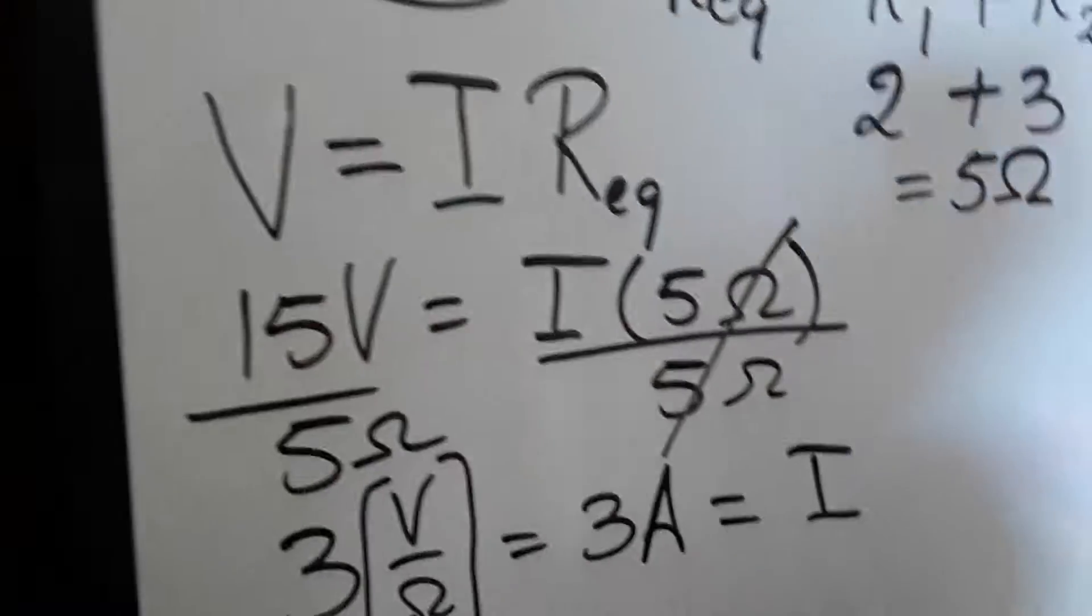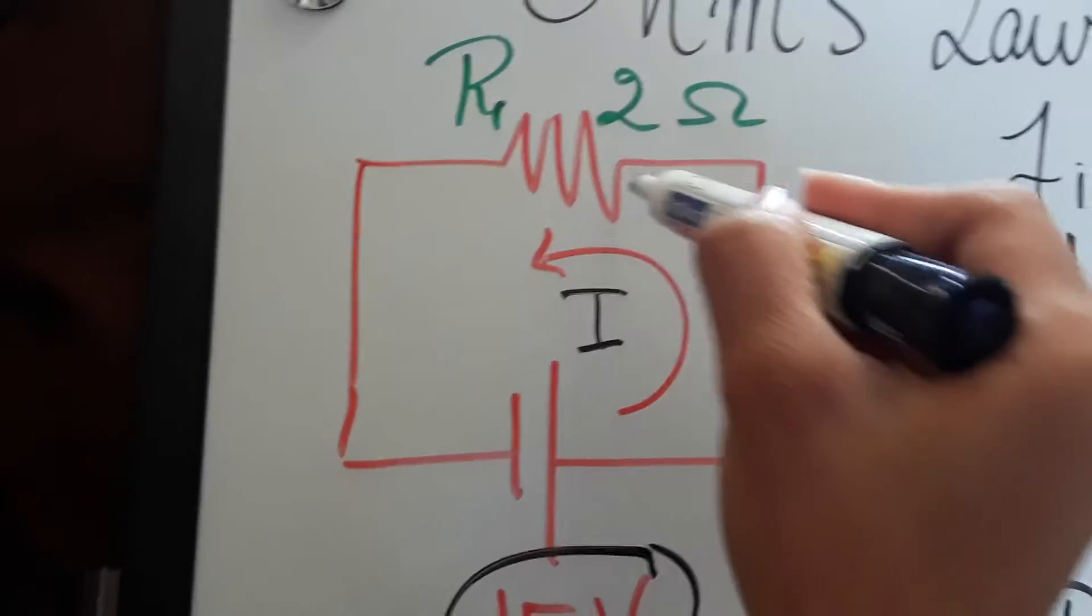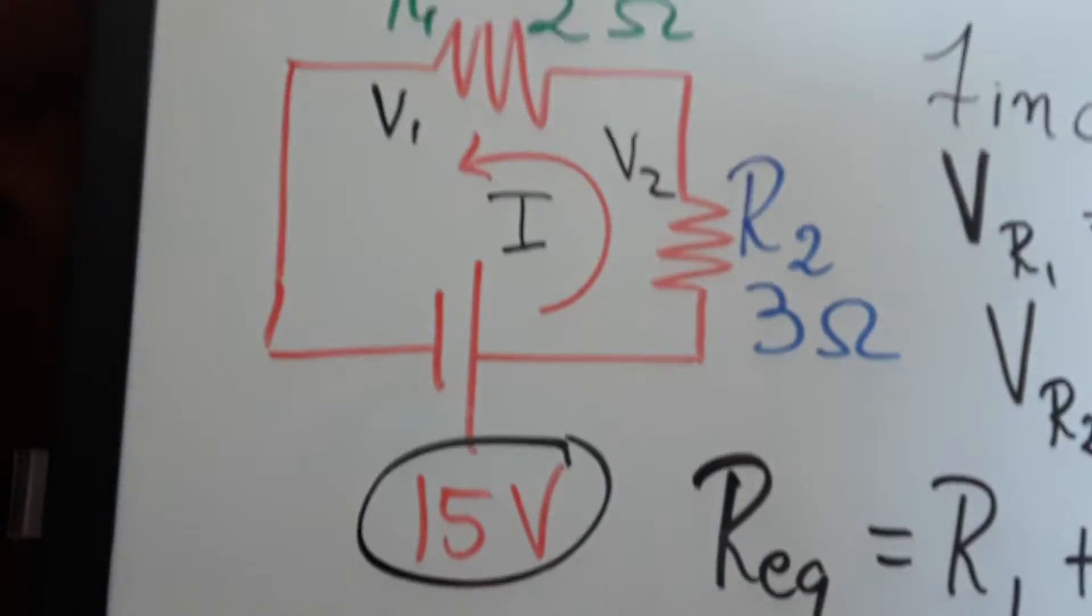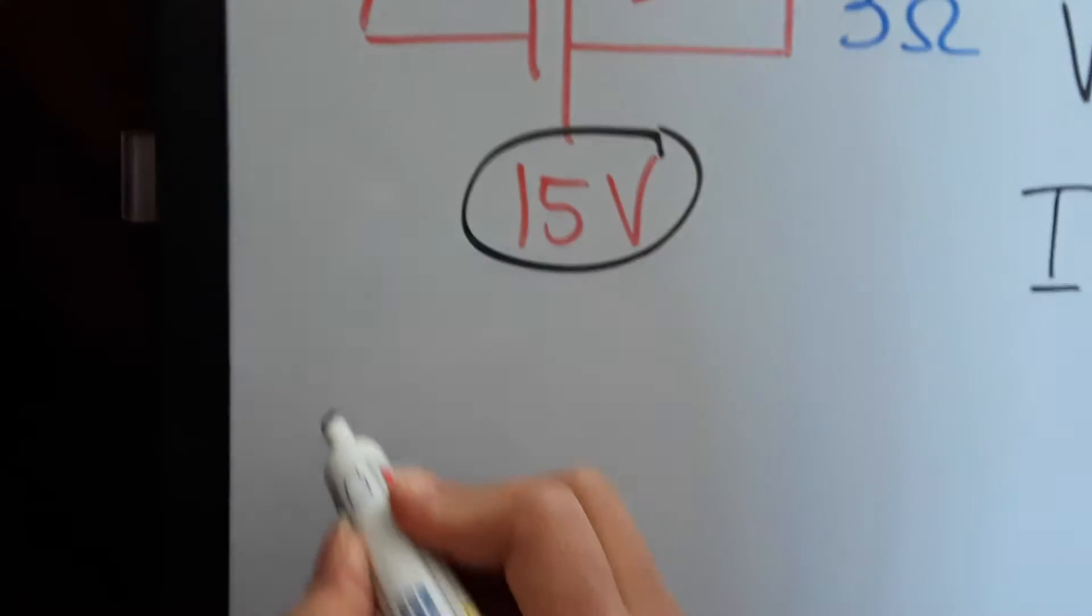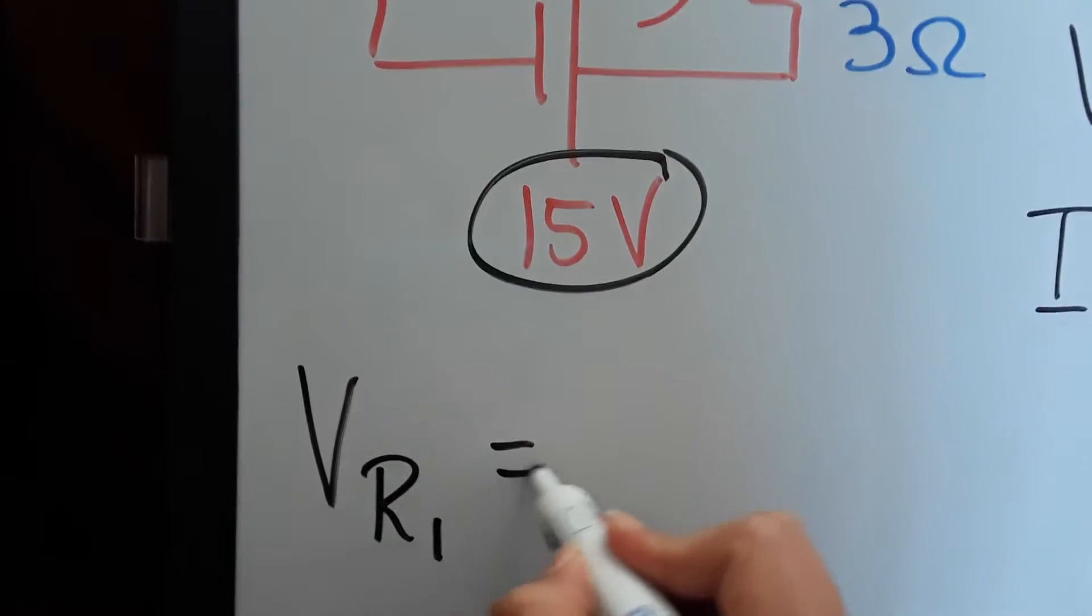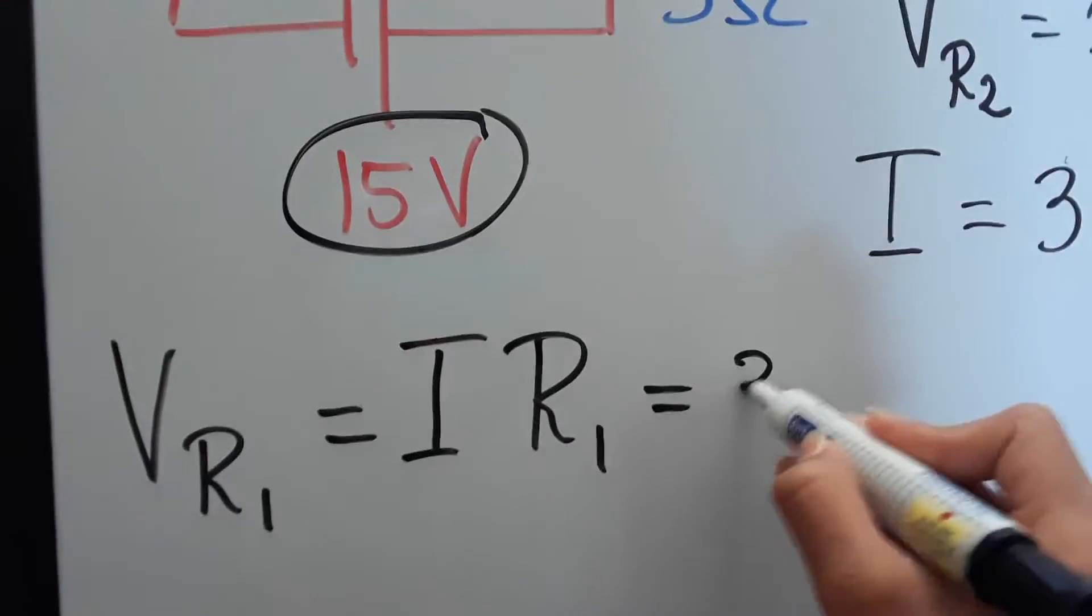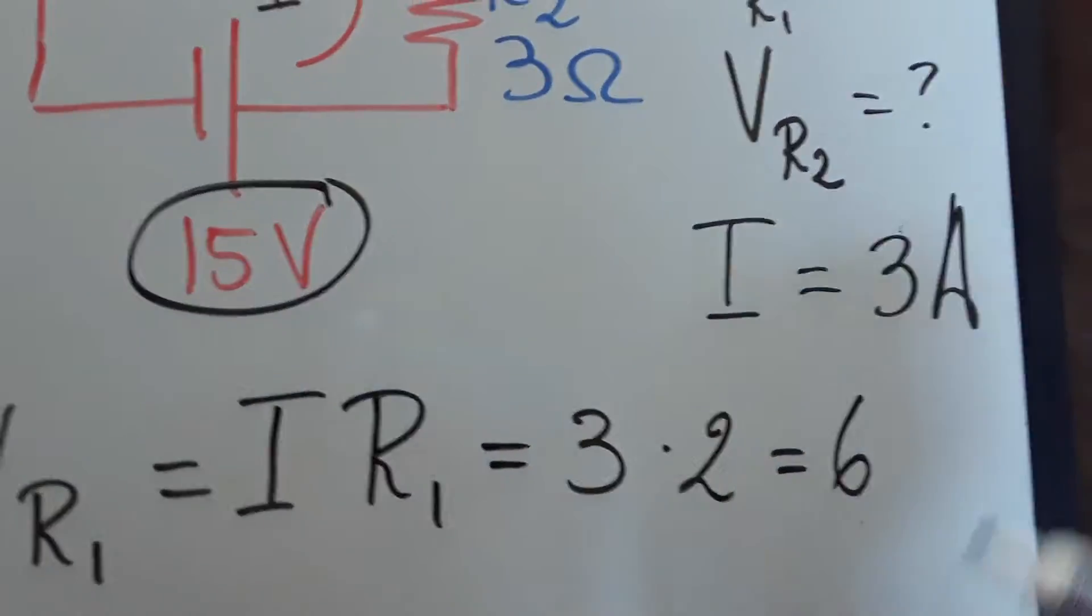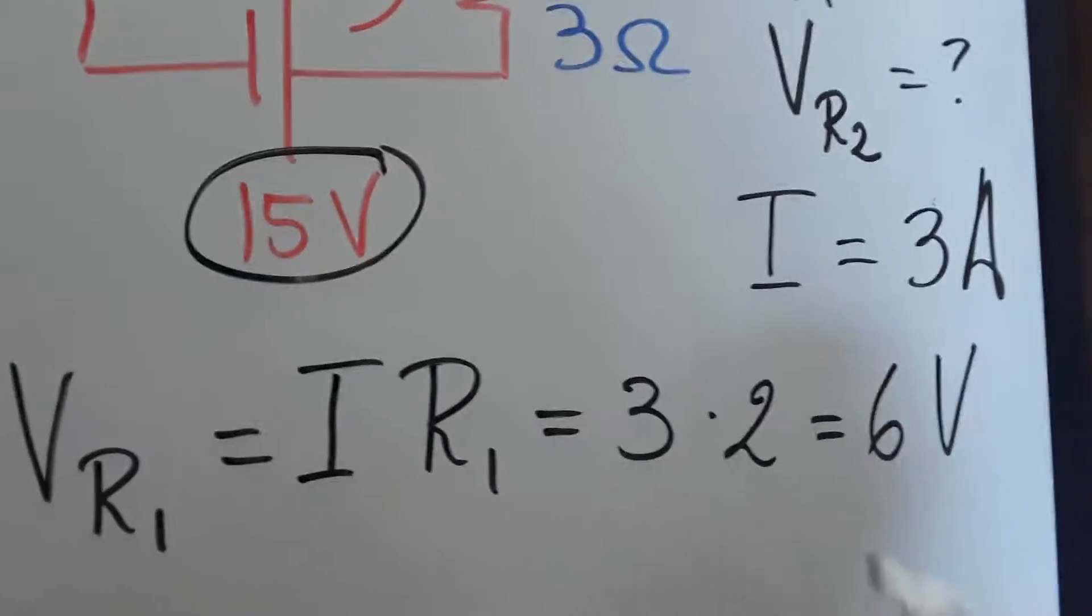And that's going to give us our current. Now we can use this current to solve for the voltage across R1 and the voltage across R2. So since we have I equals three amps, now we can just easily find the R1. We're just doing I times R1. And that's going to be three times R1, which is two Ohms. Two. Now we have six. And remember, voltage is measured in volts, so you just have six volts.